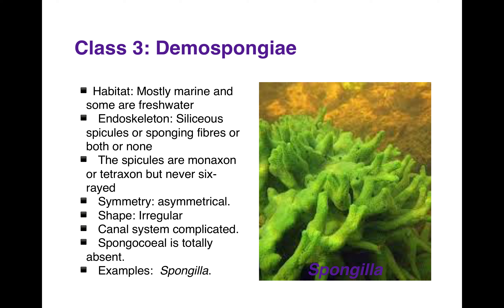Now class 3, Demospongia. They are mostly marine but some are freshwater. They have siliceous spicules or spongin fibers, or may have both or none. Their spicules are monoaxon or tetraxon but never six-rayed. They are asymmetrical with an irregular shape. Their canal system is very complicated and the spongocoel is totally absent. Example is Spongilla.